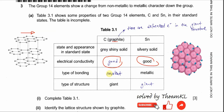For the type of bonding: for graphite, it is a covalent bond — all covalent bonds within the layers. For tin, in the metallic lattice, it is a metallic bond — electrostatic forces between the delocalized electrons and the cations. For the type of structure: graphite is a giant molecular structure and tin is a giant metallic structure.